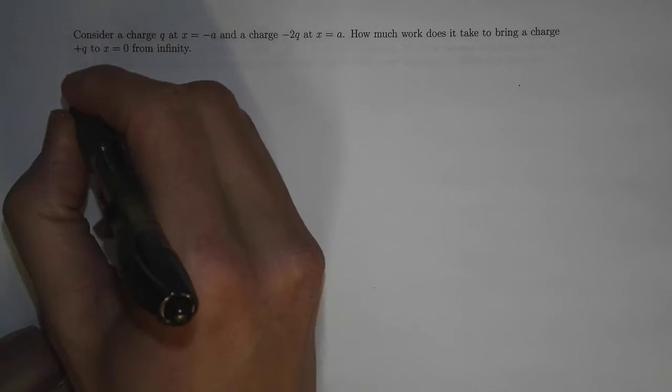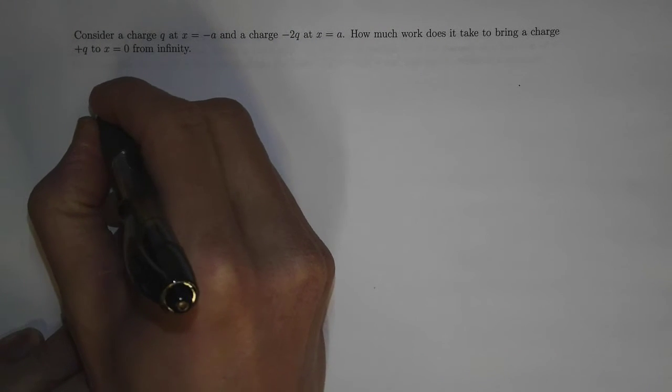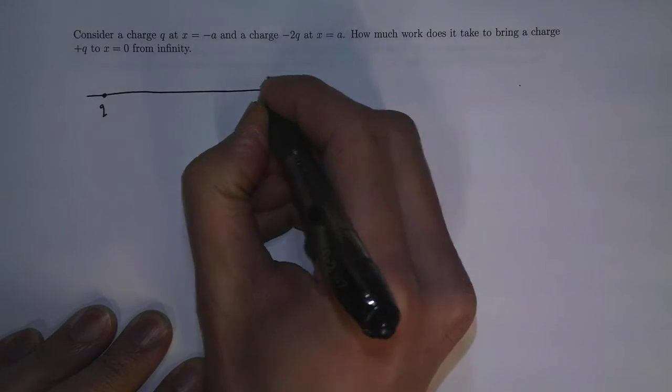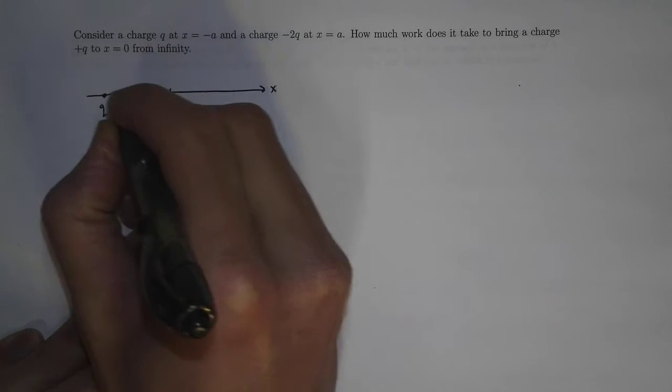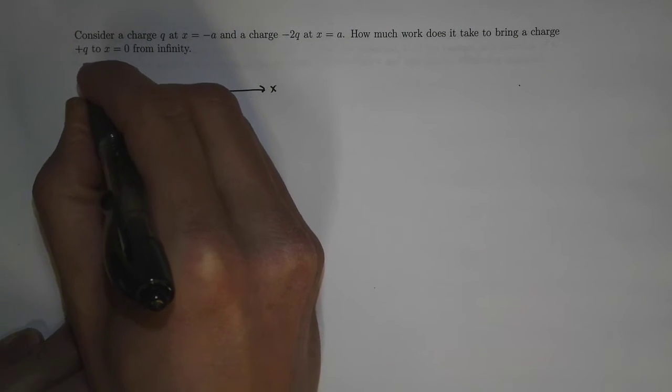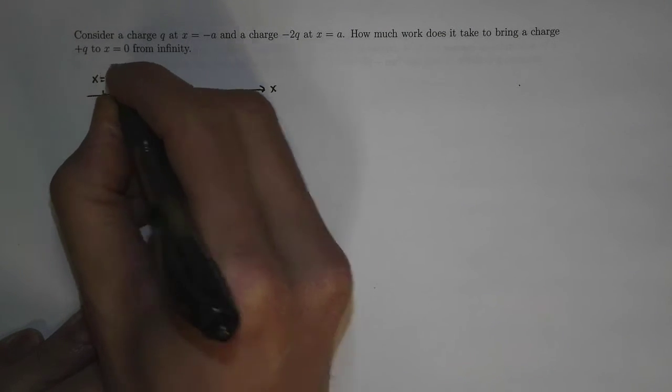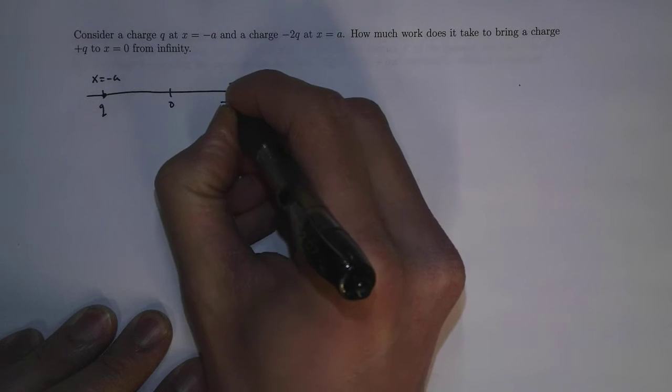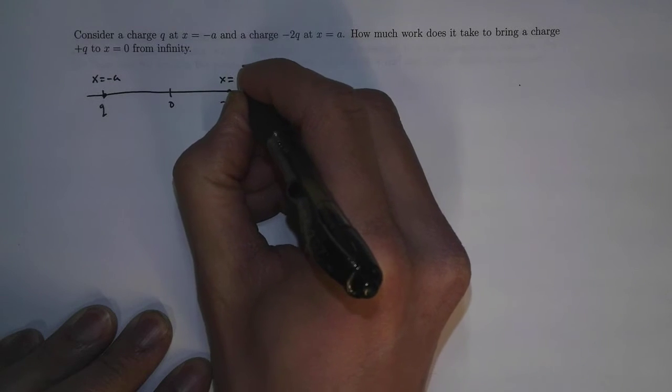Alright, so let's start by drawing a simple picture. Let's draw a charge, basically q, and this is on the x-axis here. Let's make this zero, let's make this x = -a, and let's make this point -2q at x = a.